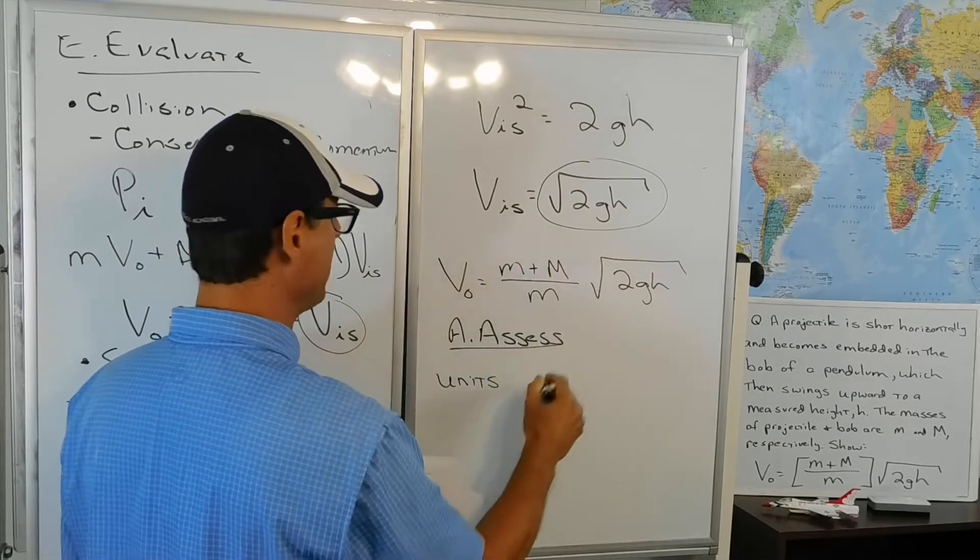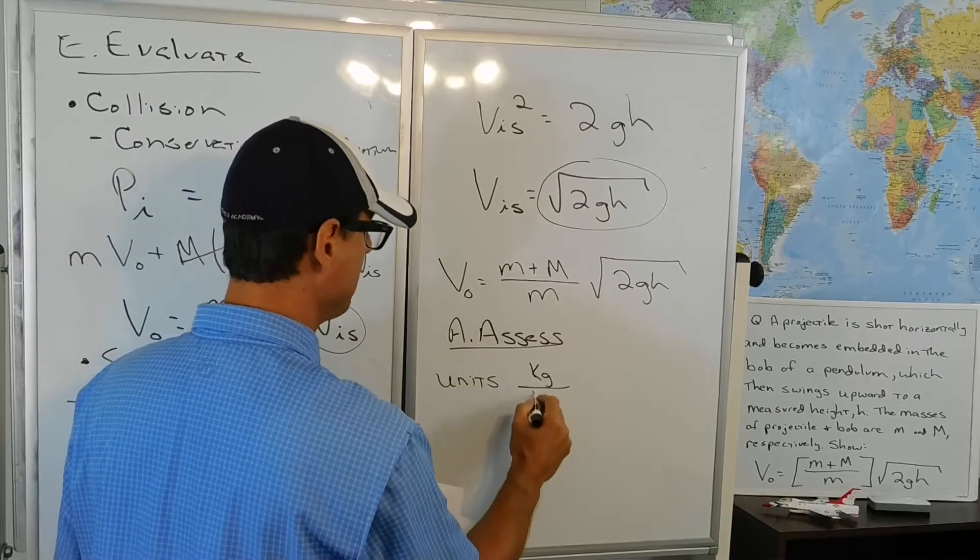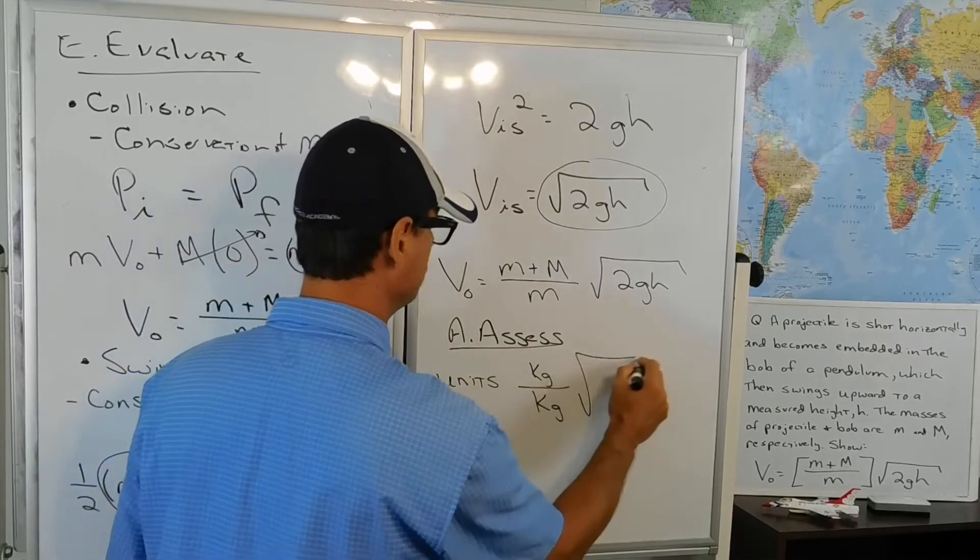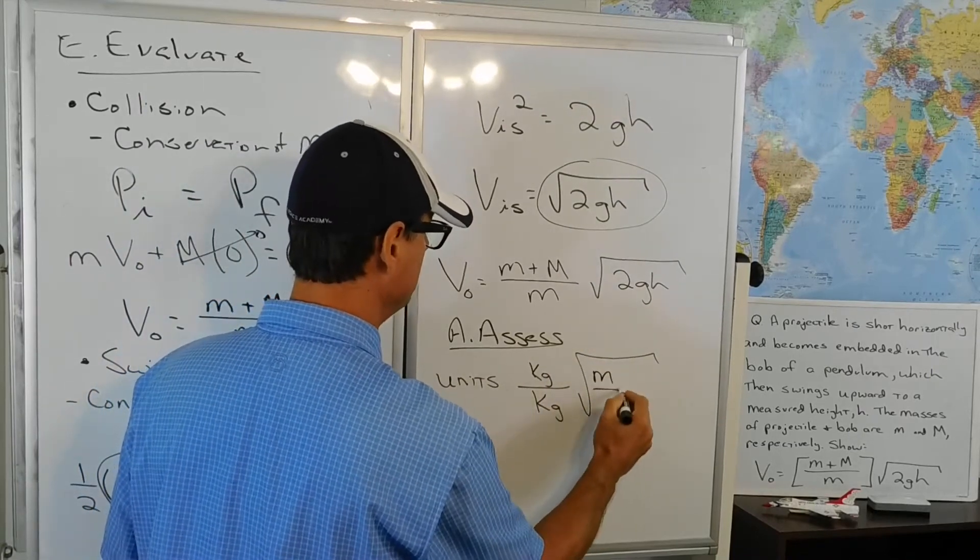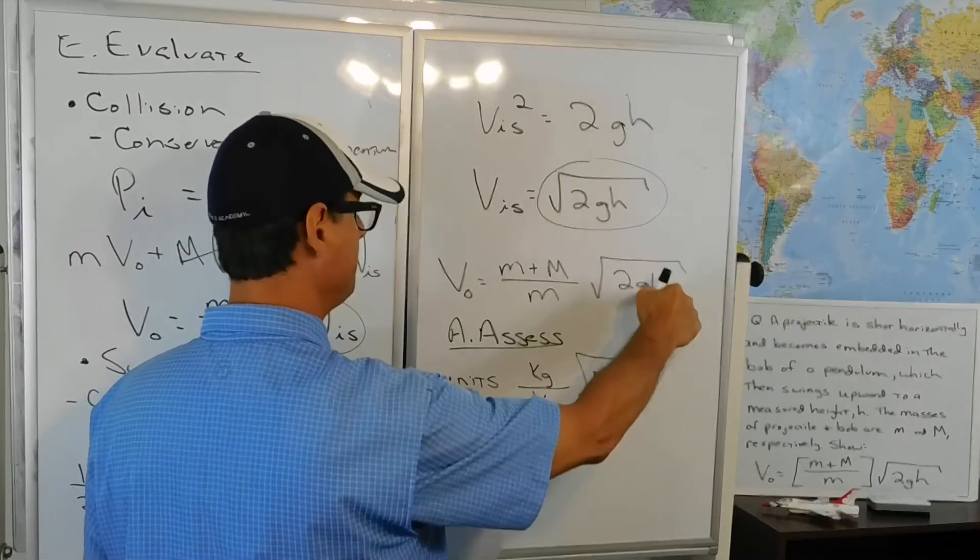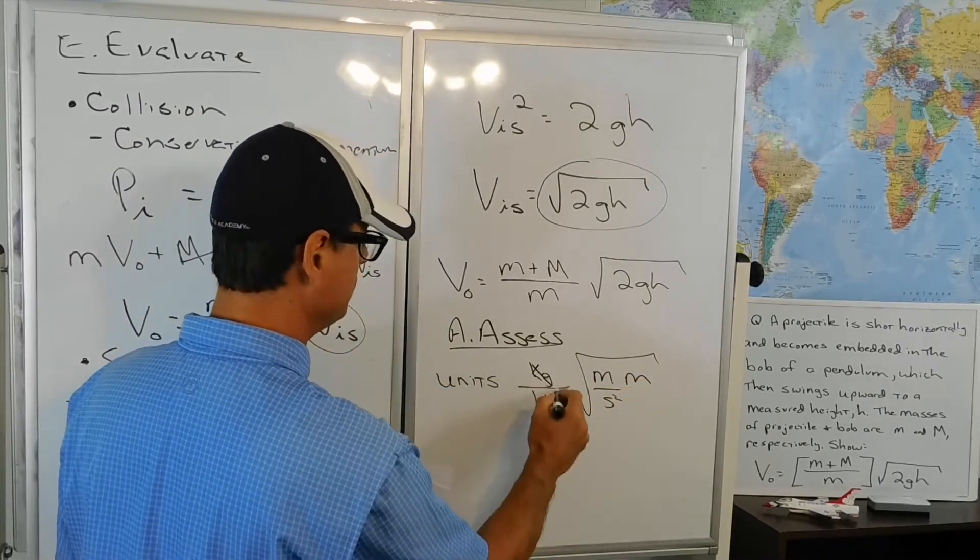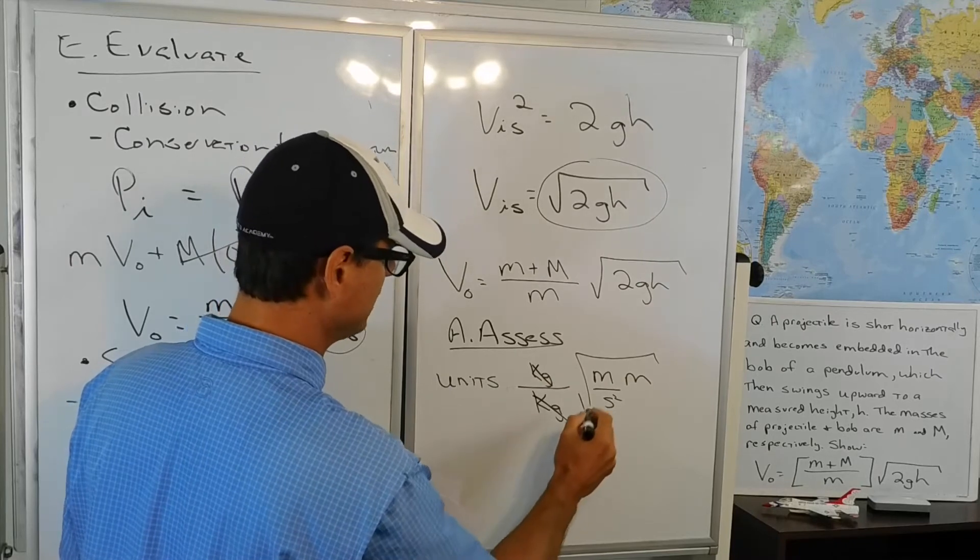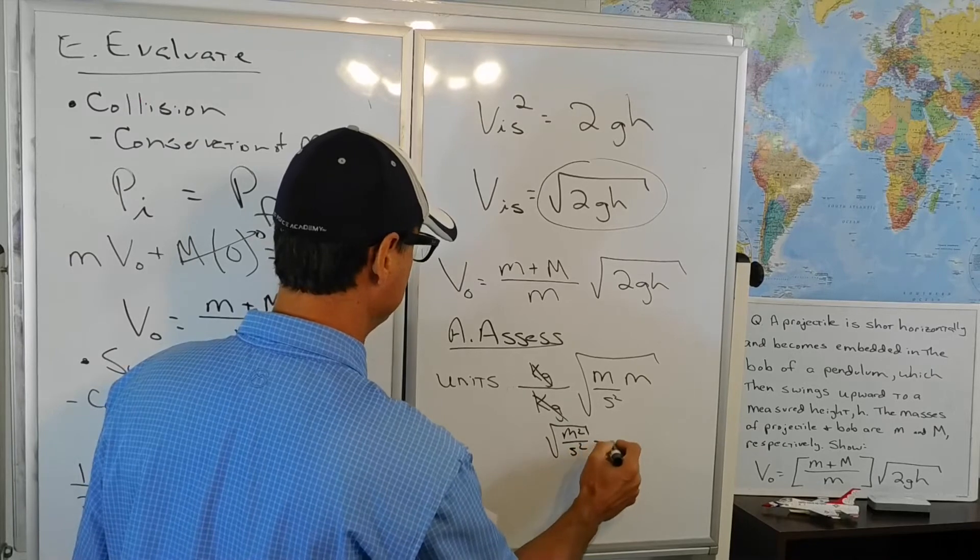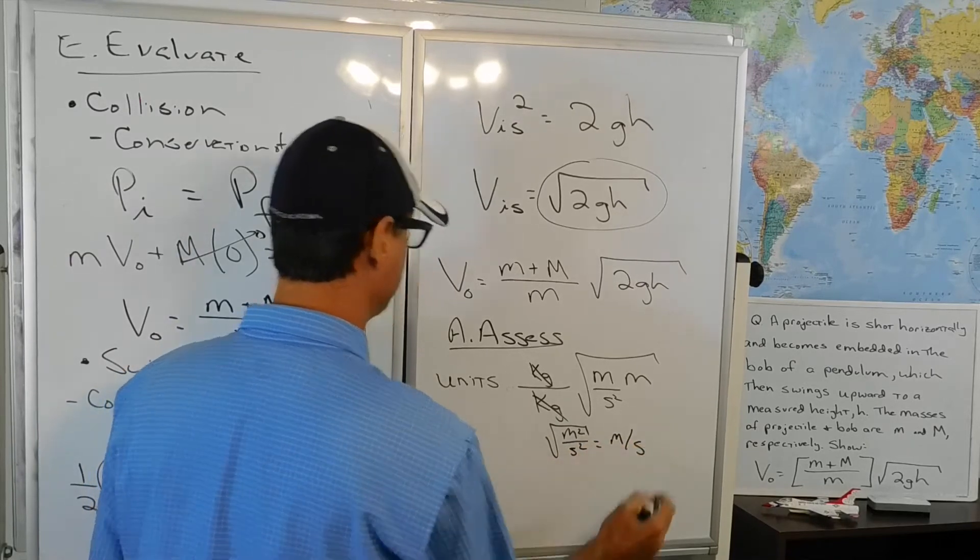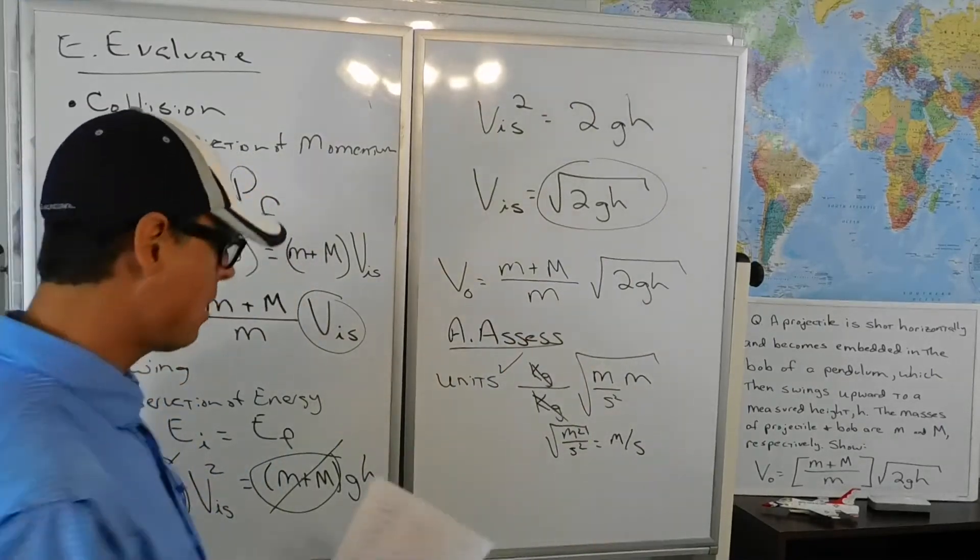V naught. So units of mass plus mass is kilograms. Units of mass in the denominator here is kilograms. And then the square root 2 is unitless. G is the acceleration of gravity meters per second squared. H is the height in meters. So let's keep doing the math on the units. Kilograms over kilograms cancels out. And then we have the square root of meters squared per second squared. And that is indeed meters per second. So our assessment on the units passes our check.